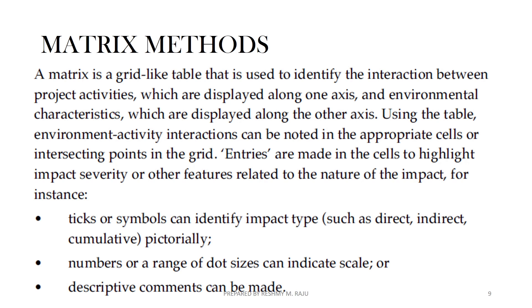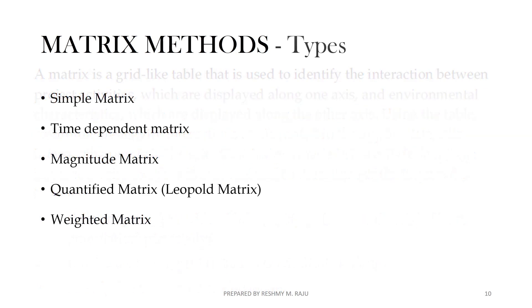The next method is the Metrics method. We are going to use grid-like tables with different activities and environmental characteristics of the project activities. The environmental activity interactions can be noted in appropriate cells or intersecting points in the grid. Entries are made in cells to highlight impact severity using tick marks, numbers, descriptive comments, or expressions. There are different types: Simple, Time Dependence, Magnitude, Quantified, Plot, and Weighted Metrics.